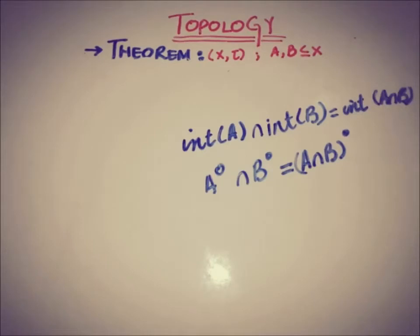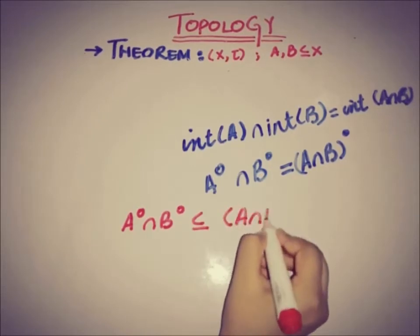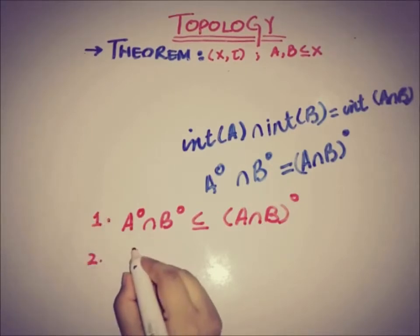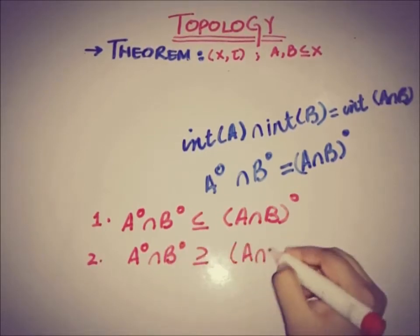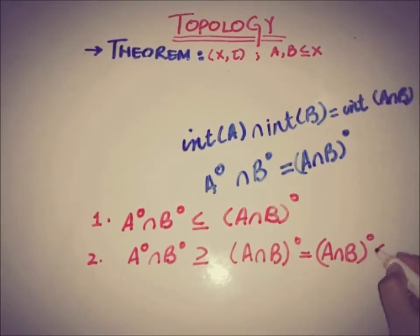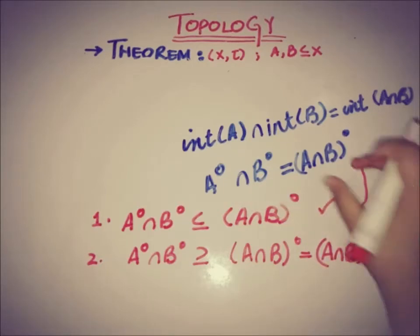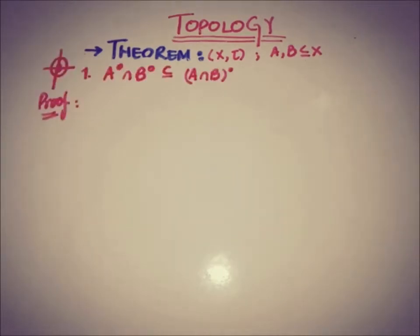To prove this theorem, we have to prove two things. First, that Int(A) ∩ Int(B) is a subset of Int(A ∩ B). Second, that Int(A ∩ B) is a subset of Int(A) ∩ Int(B). Proving both of these will establish that Int(A ∩ B) equals Int(A) ∩ Int(B).